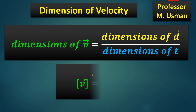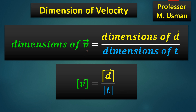We know that for dimensions, the symbol of square brackets is used. So velocity V enclosed within square brackets represents the dimension of velocity V. Therefore, the dimension of velocity V is equal to the dimension of displacement D divided by the dimension of time T.